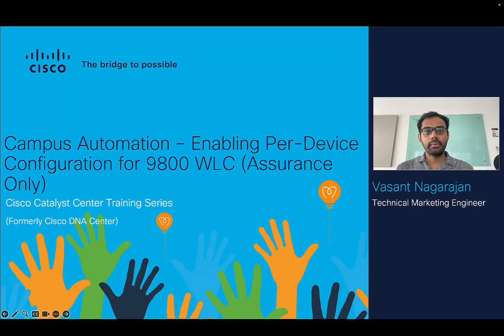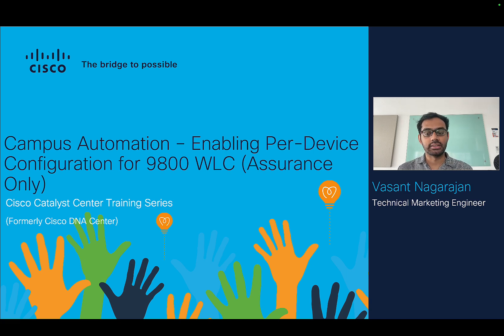Hello everyone, my name is Vasan Nagarajan and I'm a technical marketing engineer at Cisco. In this session, we'll be focusing on how to enable per device configuration for a 9800 wireless controller. This session is focused on an assurance only setup where you have simply added the controller to the inventory and assigned the controller and the access points to the respective sites.